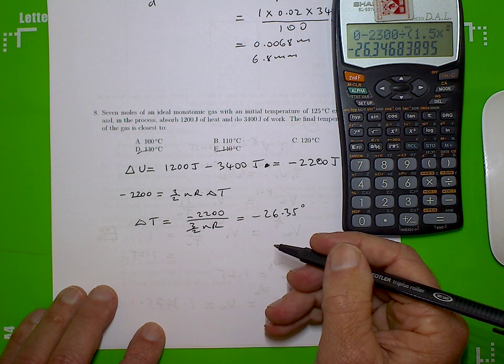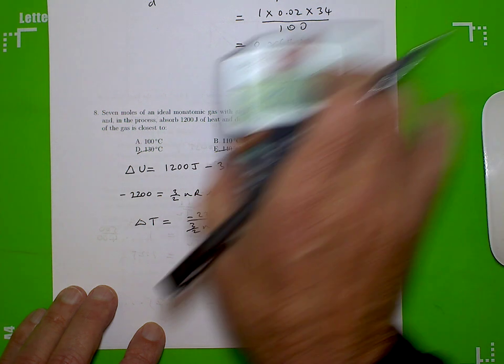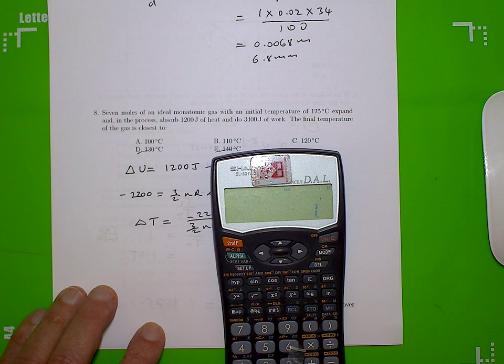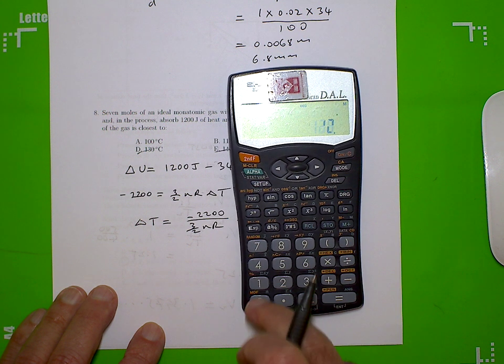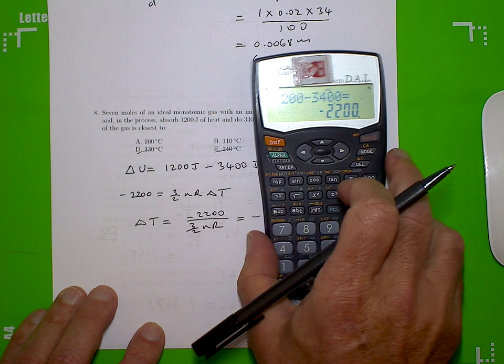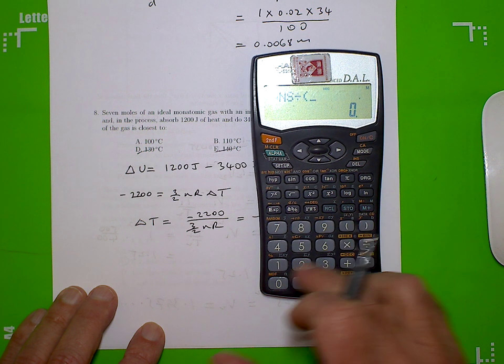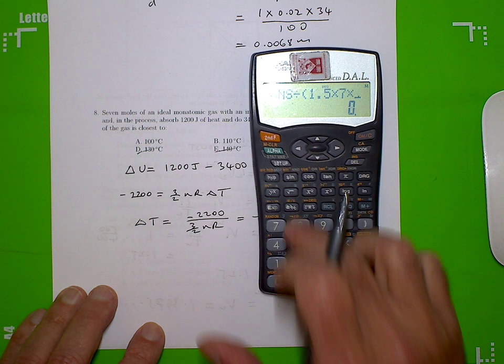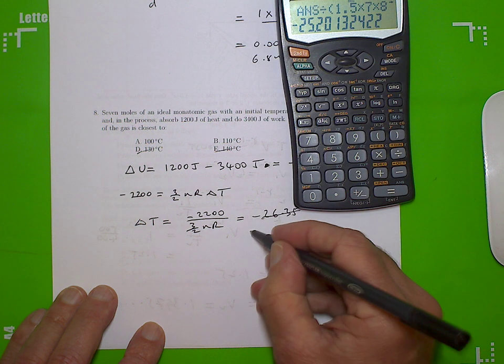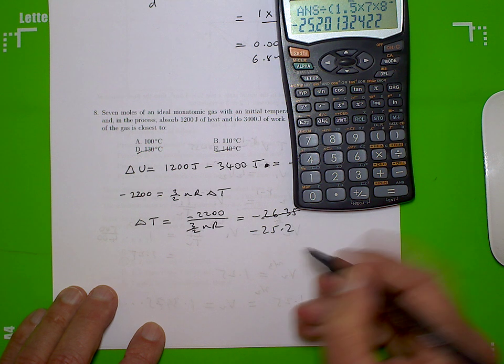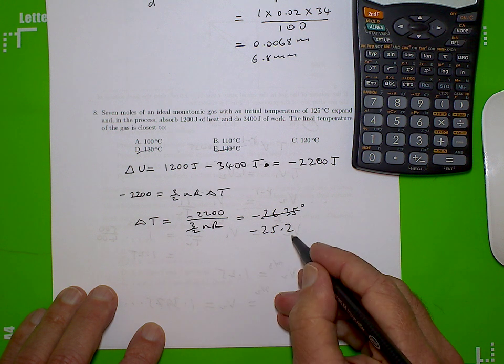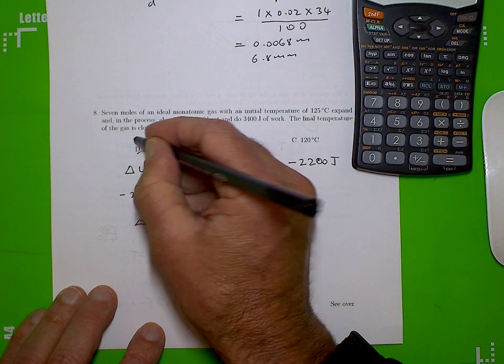So we started at, did I do that right? Let me just do that calculation again. First of all, let's start at the beginning. 1200 minus 3400 equals, yeah, minus 2200, divide brackets, 1.5 times 7 times 8.314, close bracket equals, yeah, minus 25.2. Okay. Anyway, the net result is we started at 125, we lost 25, so our final temperature is going to be 100. So we'll go with A.